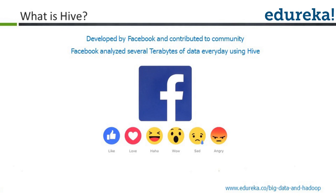Impala is very specific to Cloudera. Cloudera created an MPP — massively parallel processing — data warehouse called Impala. Impala is built on top of Hive and is an in-memory processing engine used for faster queries. The queries you run on Hive can be run on Impala as well, but Impala is very vendor-locked into Cloudera.